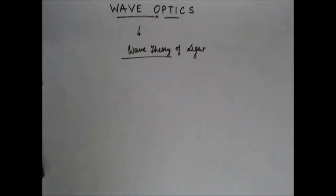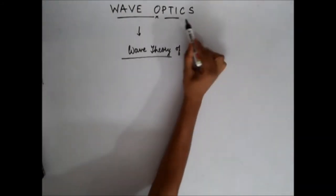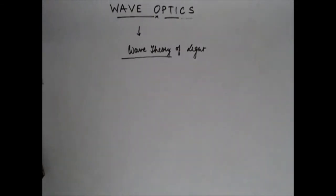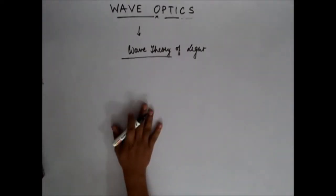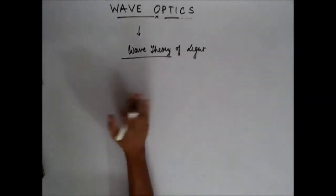Hello everyone. After geometric optics, we now move on to the next topic of optics, that is wave optics. This chapter of wave optics basically deals with the wave theory of light. This chapter is basically more interesting than the last chapter because the last chapter was more like a mathematical topic, but this is actually a conceptual topic.